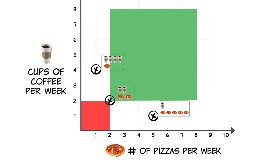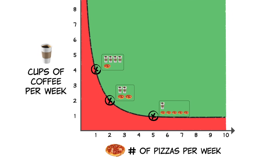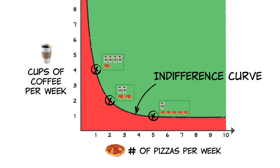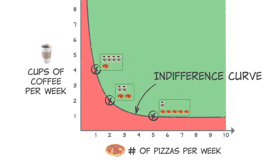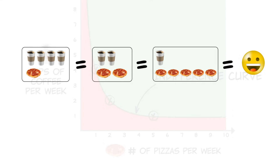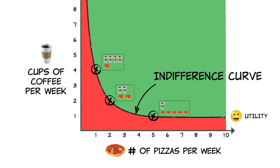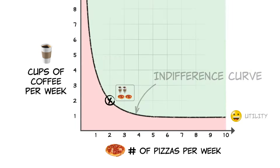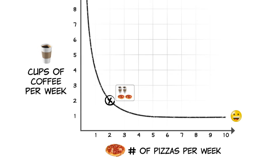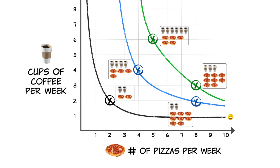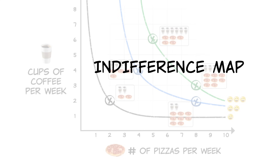The line that connects the combinations that leave you indifferent is called your indifference curve, and each point on the line represents the same amount of satisfaction or utility. Just like we drew the indifference curve for the combination of two pizzas and two cups of coffee, we could draw several other curves, each representing different levels of utility. Together, these form your indifference map.